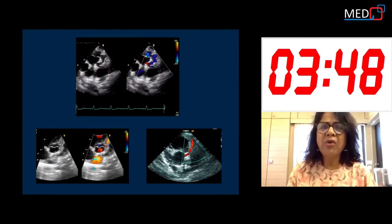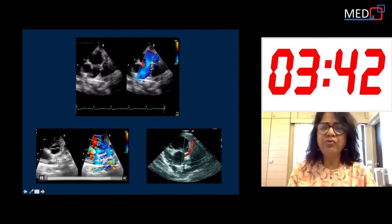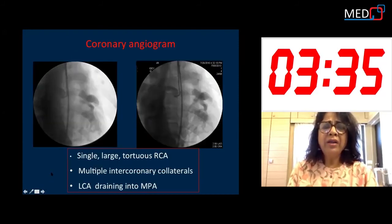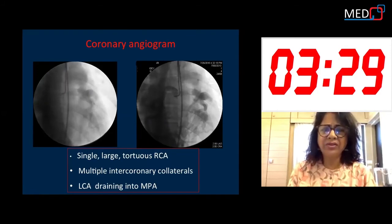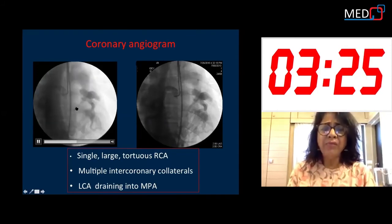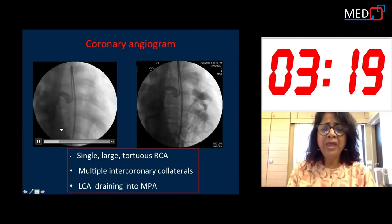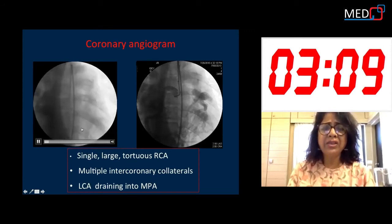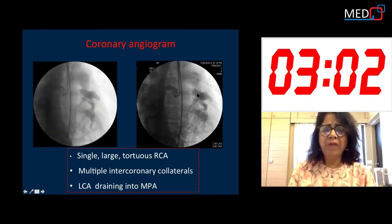I diagnosed this as a case of ALCAPA along with rheumatic mitral stenosis with a valve area of 1.2 without any pulmonary hypertension. To confirm the diagnosis, a coronary angiogram was done. The left coronary artery could not be located in any of the coronary sinuses of Valsalva. Whereas selective right coronary angiogram revealed a single large tortuous right coronary artery and multiple intercoronary collaterals moving over the RV surface, interventricular septum, and the apex.